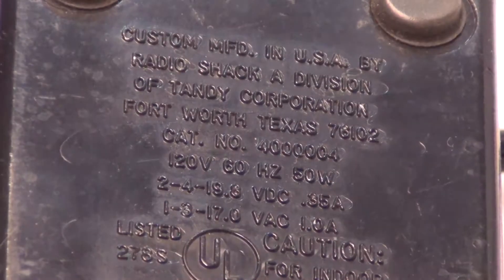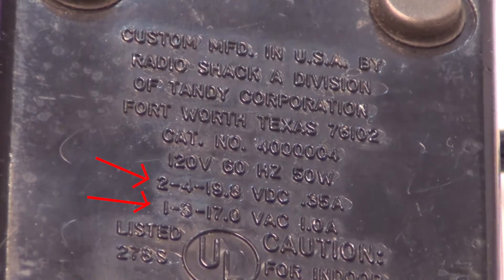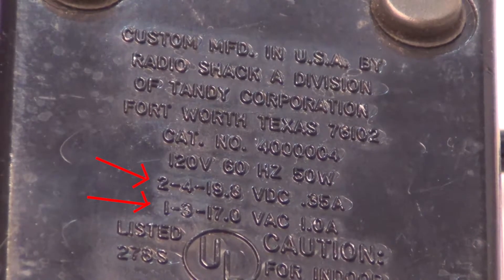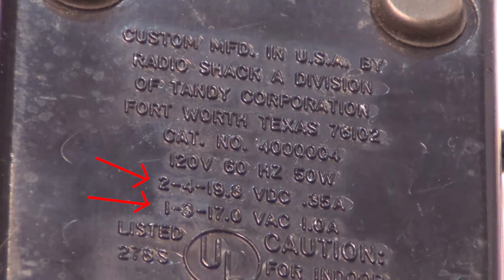What I wanted to show here is on pins 2 and 4 it says 19.8 volts DC and 0.35 amps. And then on pins 1 and 3 it's 17 volts AC and 1 amp.